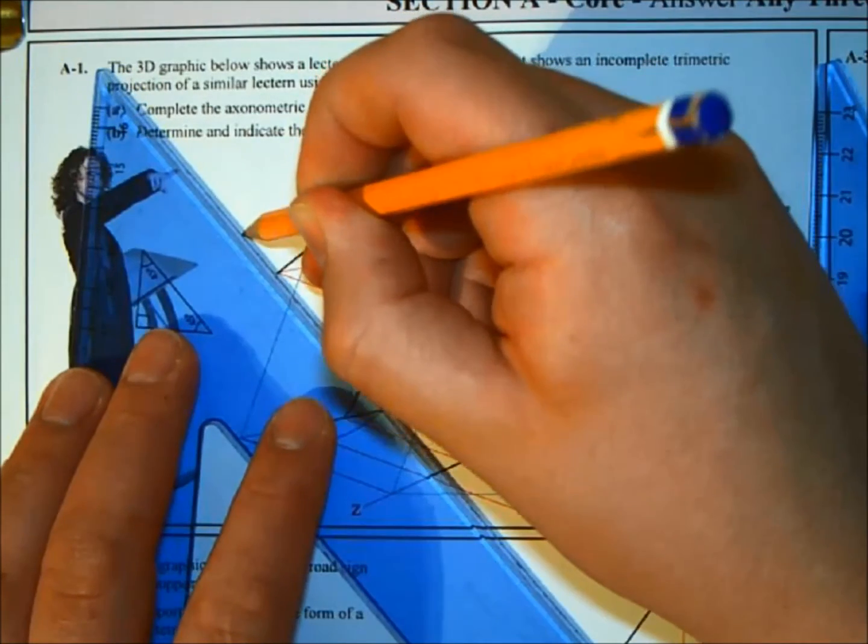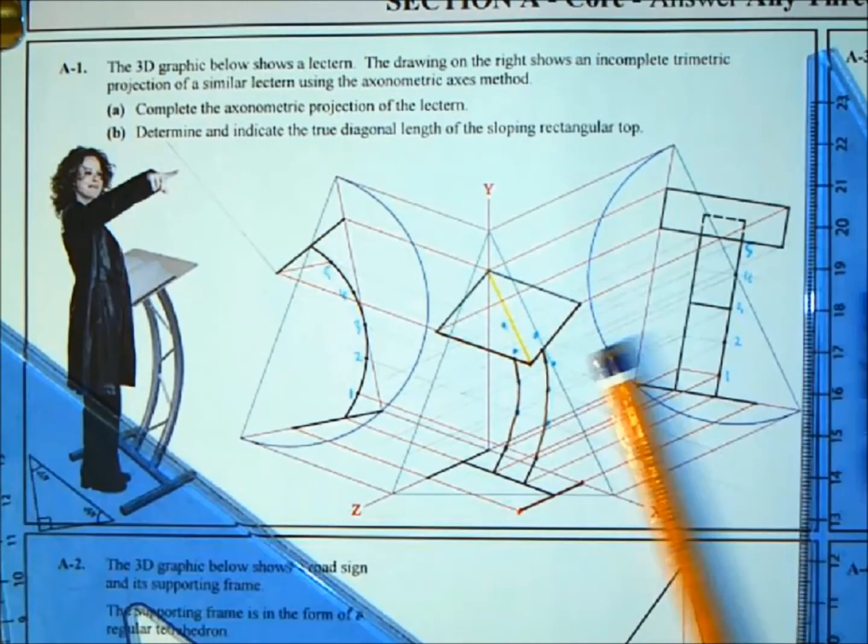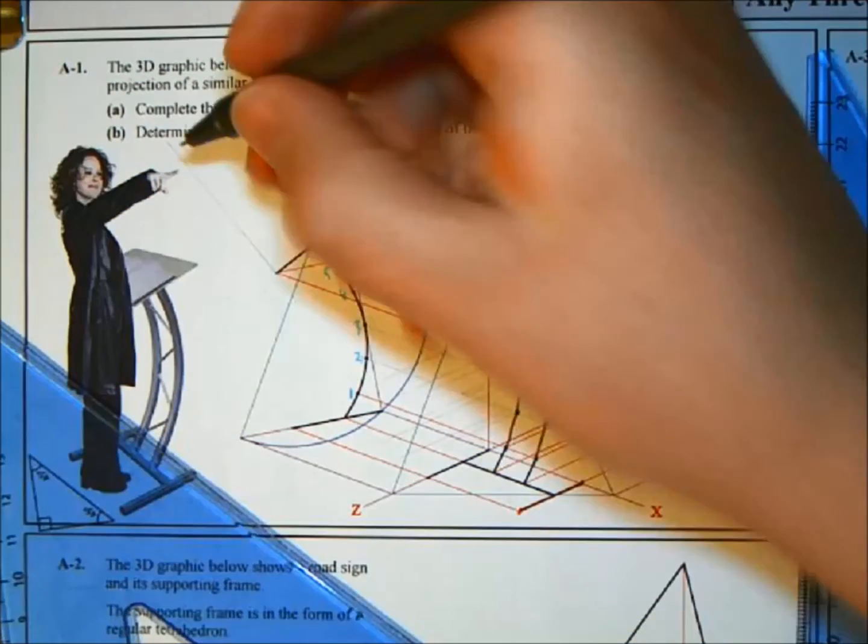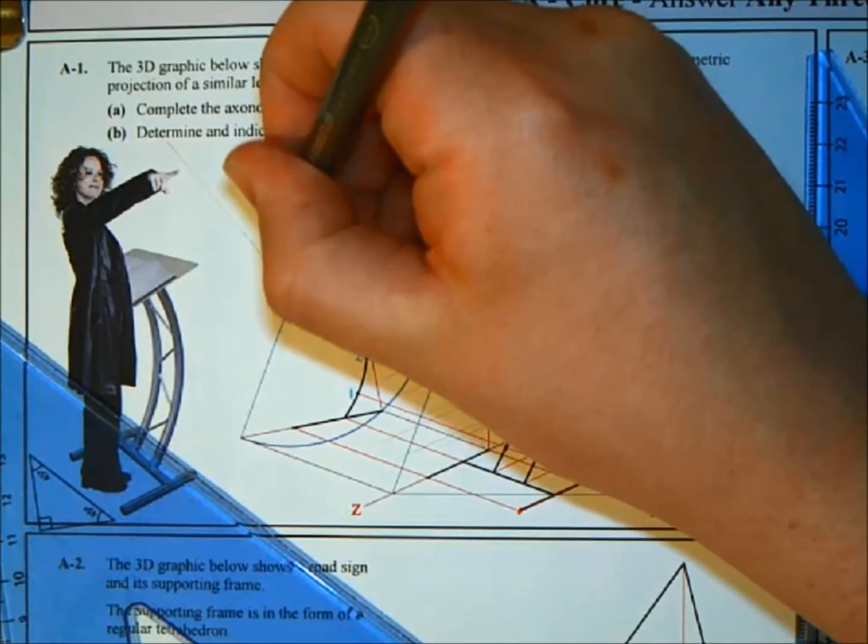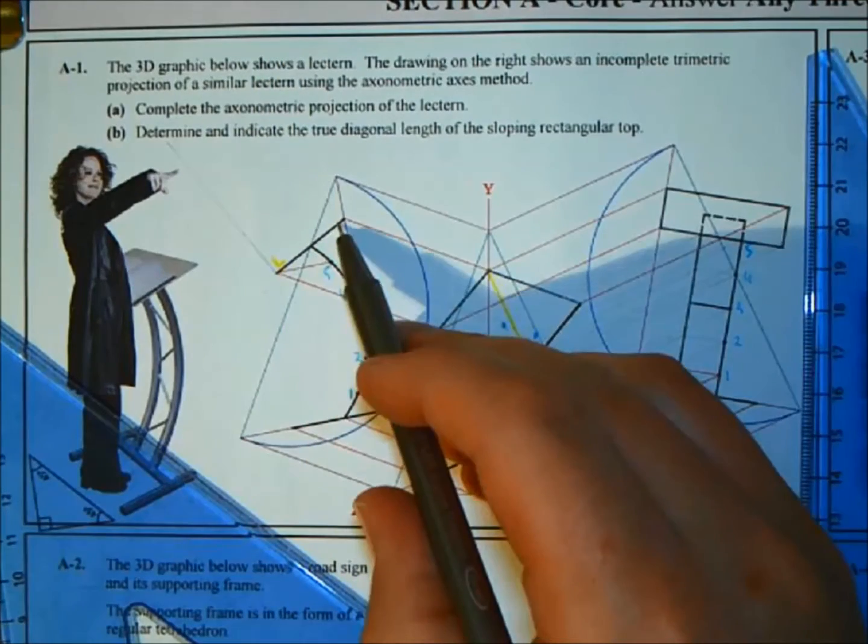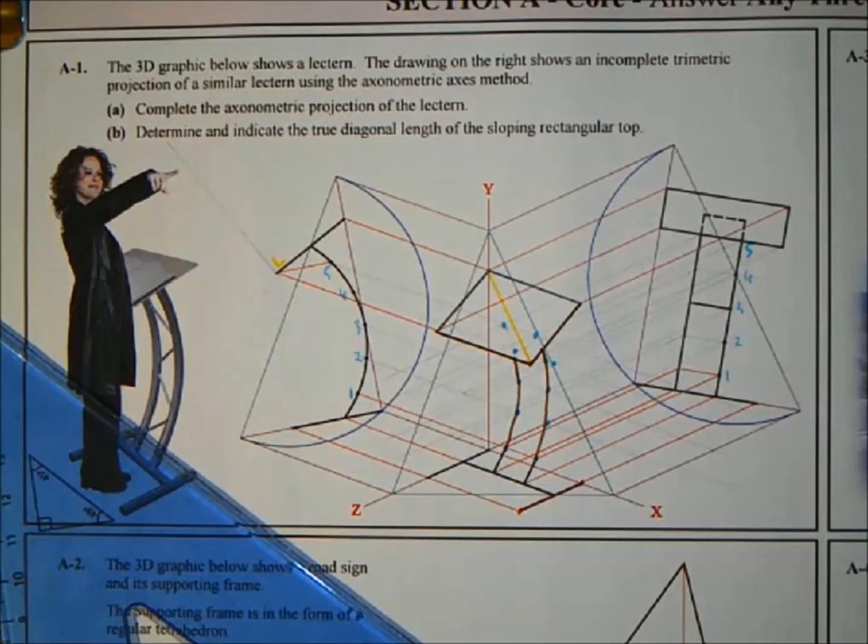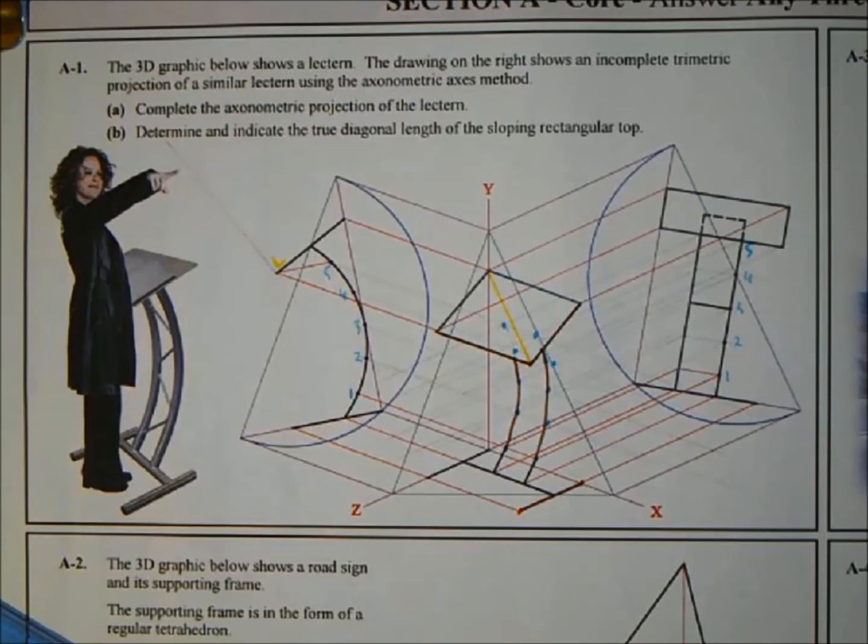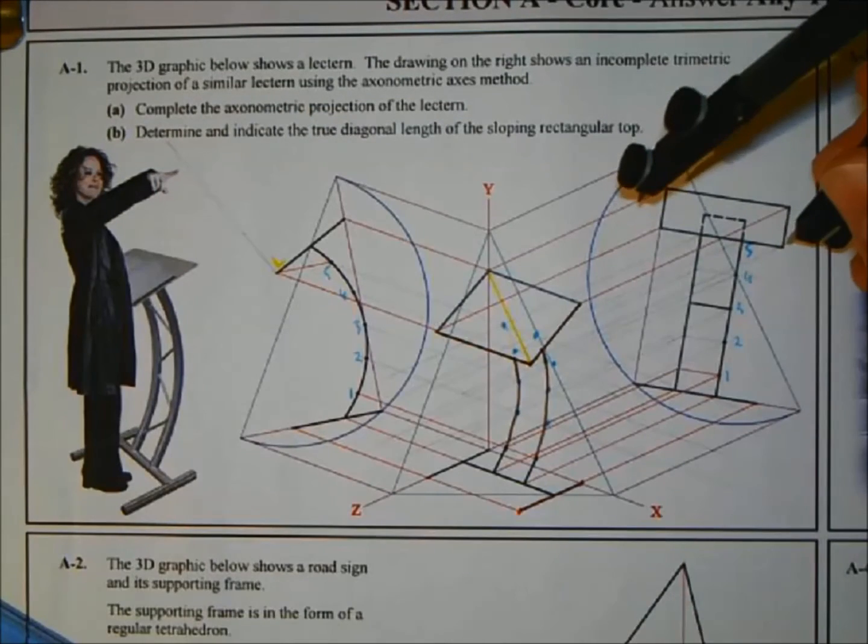So we have 90 degrees in here. So that was the height, this line now is going to be our length. So if I get the length here from the end, because that's the true length, because you're looking straight at it, it's not tilted any angle, that's the true length here.